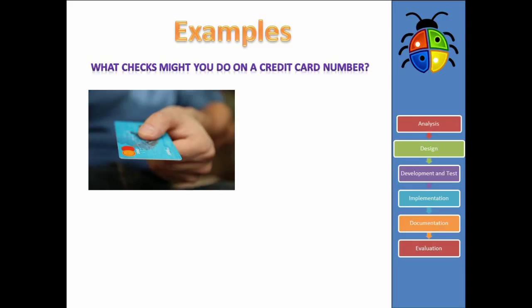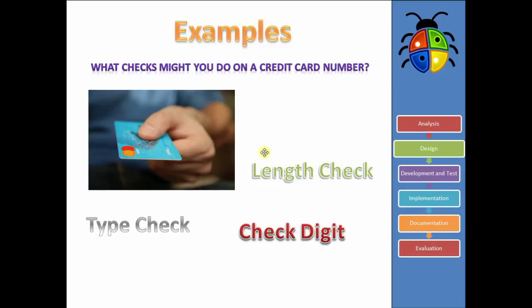Alright, so let's have a look. So, we could have a length check. So, we know that a credit card has, off the top of my head, I think 16 numbers. I might be wrong on that. So, we could have a length check to check that there are 16 characters on the credit card, or however many there actually are. We could have a type check. So, those numbers, we want to make sure they're actually numbers and that somebody hasn't just put A, B, C, D, instead of putting in credit card numbers there as well.